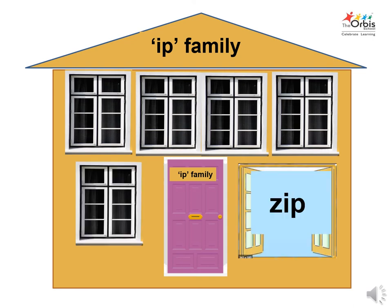Let's find the name of the sixth family member living in the house. The phonic sound of z is z. To combine the sound of z with the sound of ip to get the name of the person inside the window — that is zip. Say hello to zip.